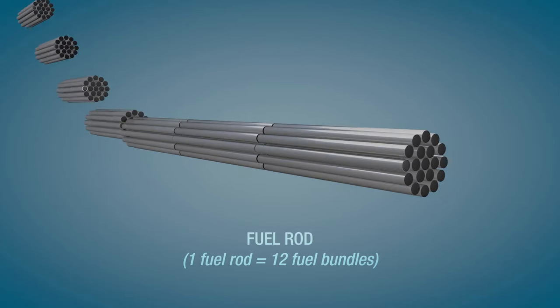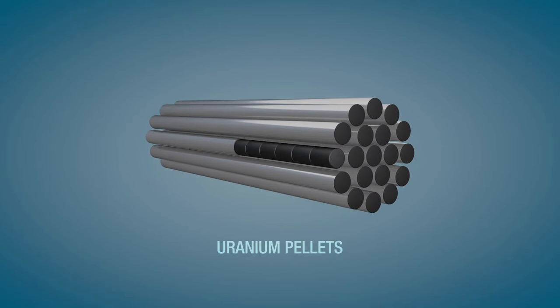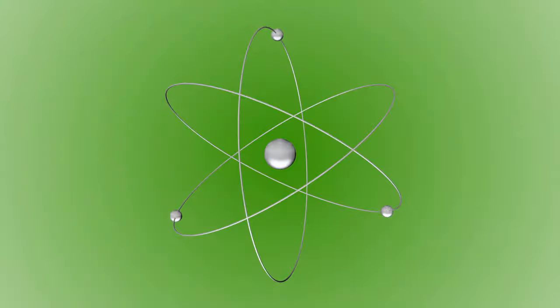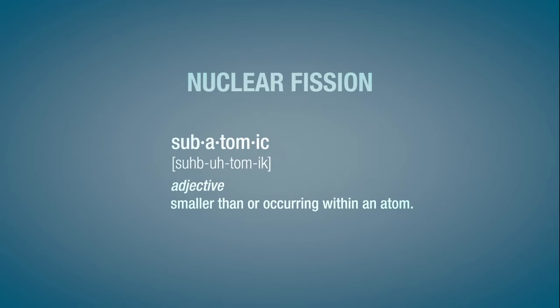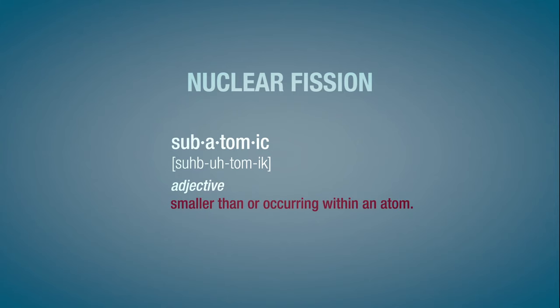The fuel bundles are made up of completely safe inert uranium pellets. But the process of nuclear fission happens at a subatomic level. It is invisible to the eye, and it can be hard to grasp a process which cannot be seen.